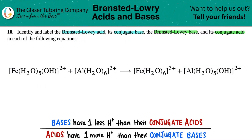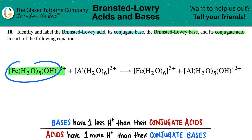The first thing we have to do is hook up the pairs. It's the easiest way to go about doing this type of question. I like to work from left to right. So I'm going to highlight this ion right here — this whole mess, Fe(H2O)5OH 2+. Now I'm looking on the product side to find the corresponding pair, and like elements go with like elements.